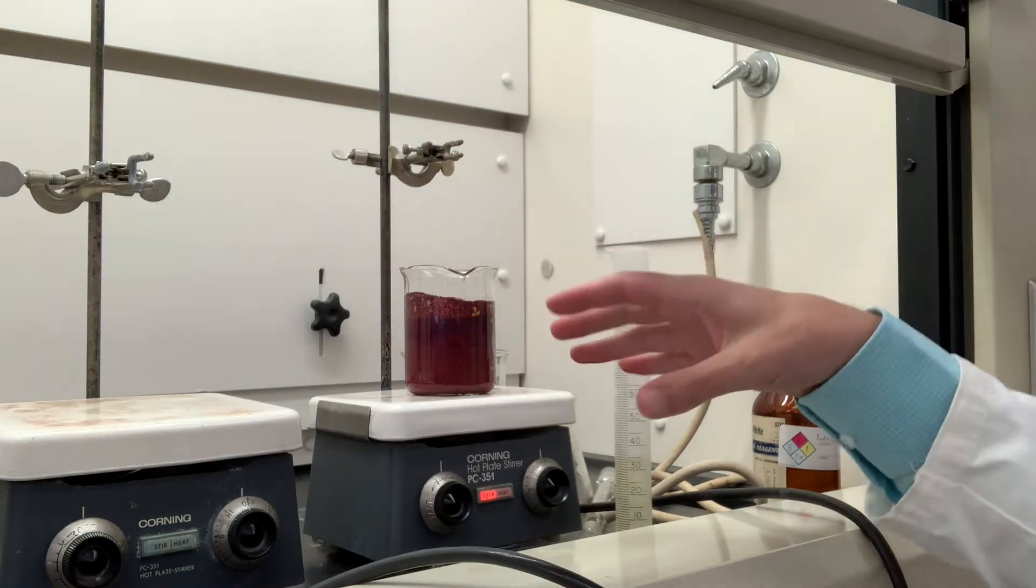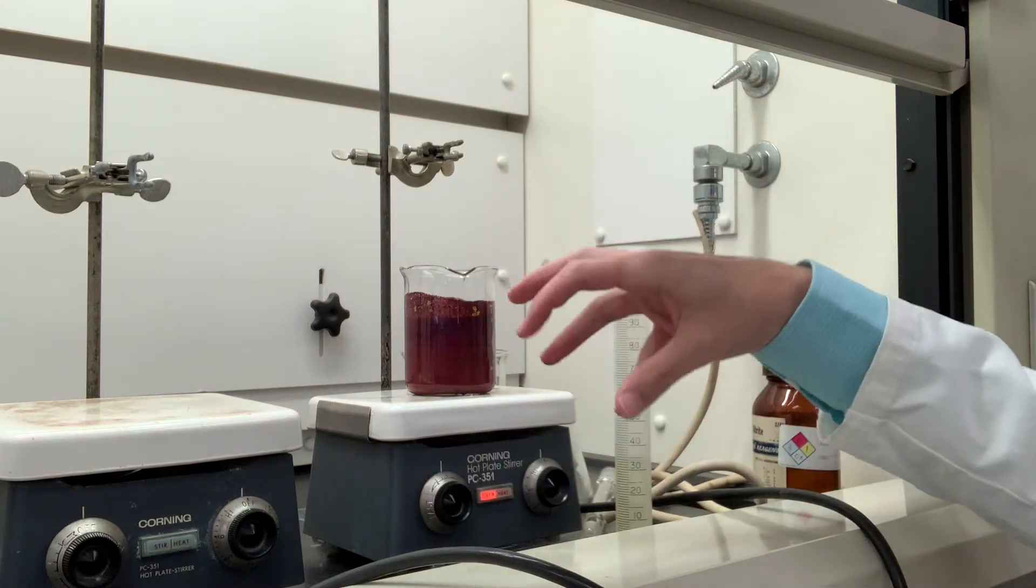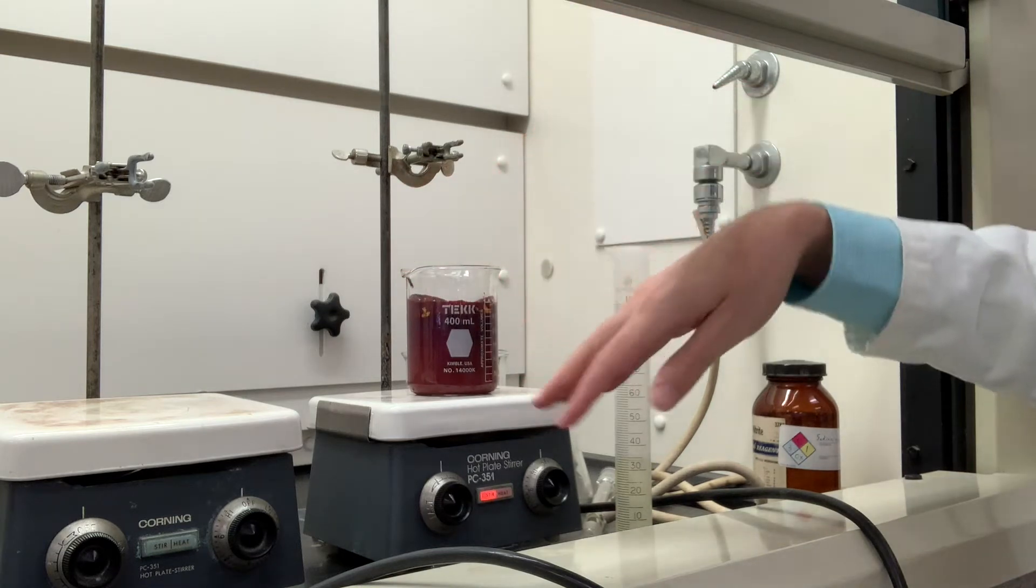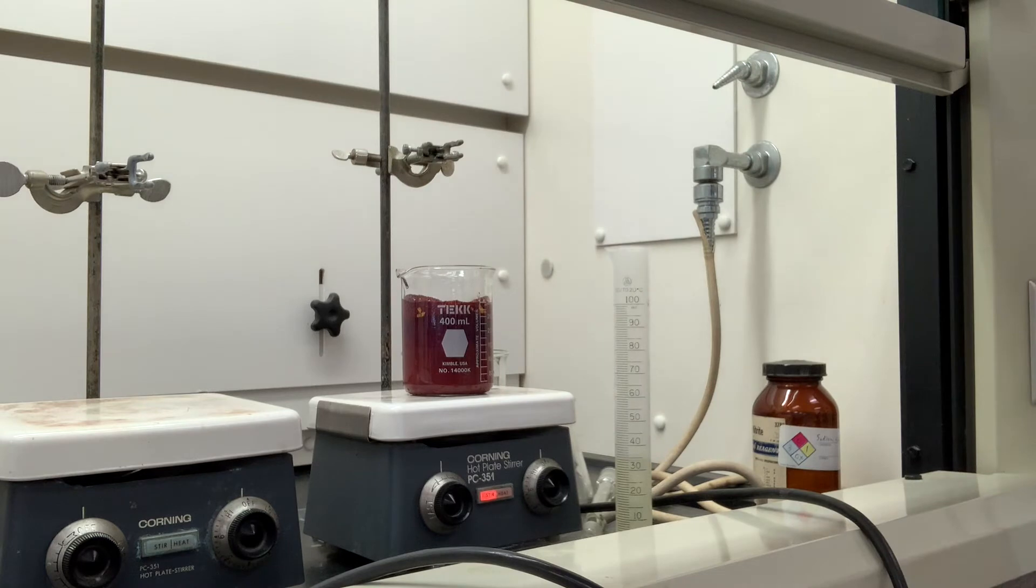Remember that methyl orange is kind of orange and yellow in a basic solution and it's red in an acidic solution. Because of all the hydrochloric acid and acetic acid that we've added, it's under an acidic condition right now.